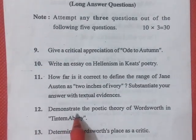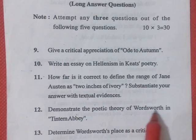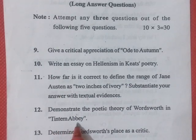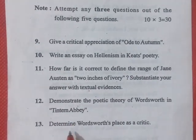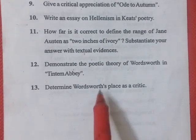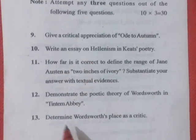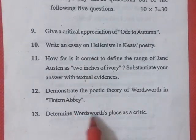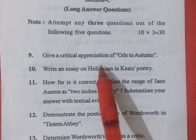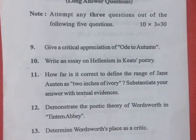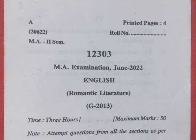The twelfth question is: demonstrate the poetic theory of Wordsworth — in which poem? In 'Tintern Abbey,' which is also in your syllabus. And the last one is: determine Wordsworth as a critic. So in this section two questions are based on William Wordsworth, and two questions are based on John Keats, and then Jane Austen. This paper is also a very simple paper — I don't find any kind of difficulty here. Romantic Literature — thank you.